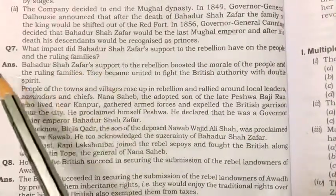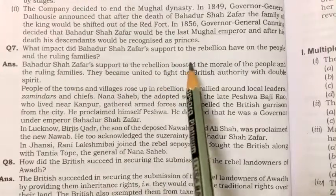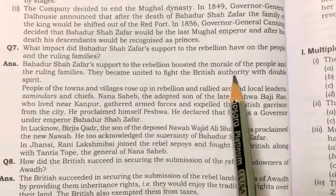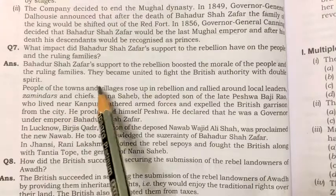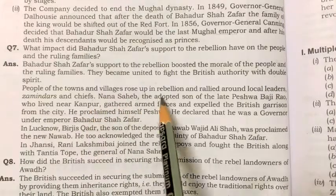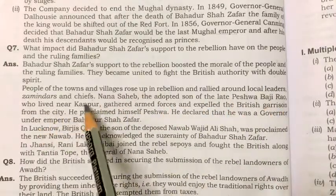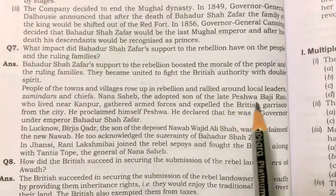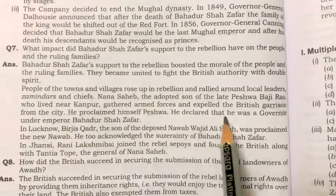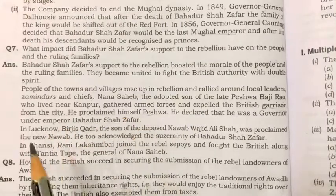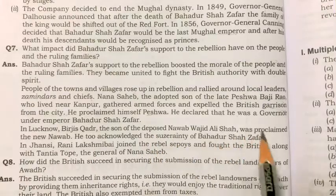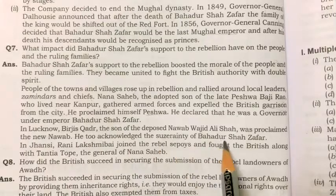Question number seven: what impact did Bahadur Shah Zafar's support to the rebellion have on the people and ruling families? His support boosted the morale of the people and ruling families, who became united to fight British authority. People of towns and villages rose up in rebellion and rallied around local leaders. Nana Sahib, the adopted son of the late Peshwa Baji Rao, gathered armed forces and expelled the British garrison from Kanpur, proclaiming himself Peshwa and declaring himself a governor under Emperor Bahadur Shah Zafar.